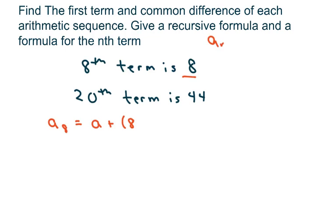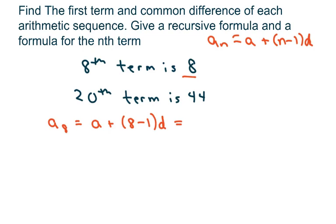The formula we're using is a sub n equals a sub 1 — I'm just going to call it a, let that be my first term — plus n minus 1 times d. So we have a plus 8 minus 1 times d, and we know that equals 8. So my 8th term equals 8.